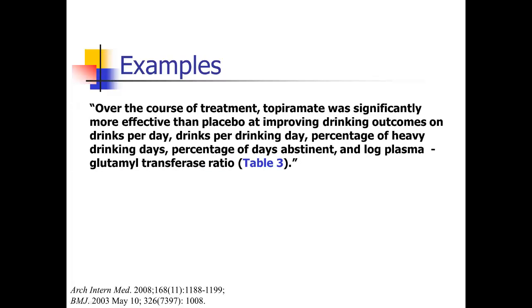Here's an example. This one reads: over the course of treatment, topiramate — the drug they were giving — was significantly more effective than placebo at improving drinking outcomes on drinks per day, drinks per drinking day, percentage of heavy drinking days, percentage of days abstinent, and log plasma glutamyl transferase ratio. There's a whole bunch of outcomes measured in this study, and you can imagine table three is a big table with lots of numbers. But they're giving you the high-level summary: on all these different outcomes about drinking, the treatment beat the placebo. If you want more details, you can go to the table.